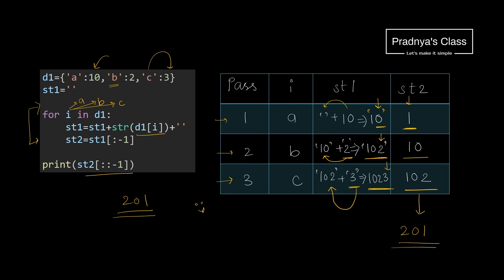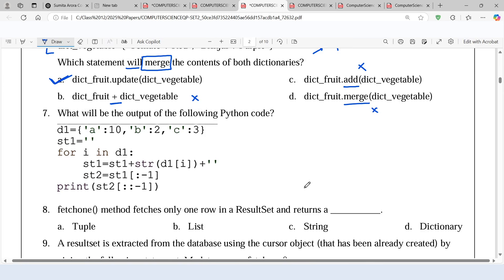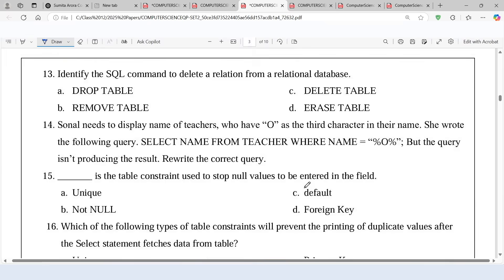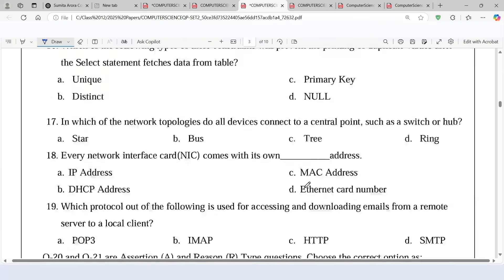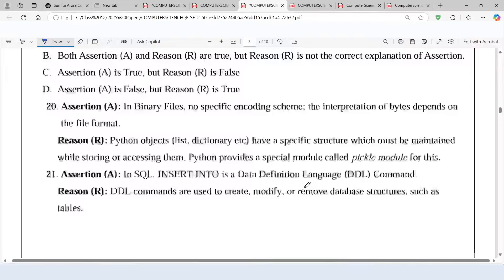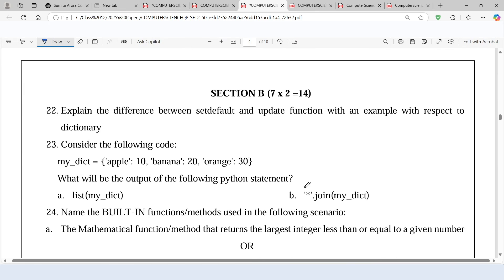Hope you got this explanation and you also got the same output. Let's scroll down and check whether we have more questions based on dictionary. We got one more question — it is a theory question. We need to tell the difference between setDefault and the update function with the help of an example.